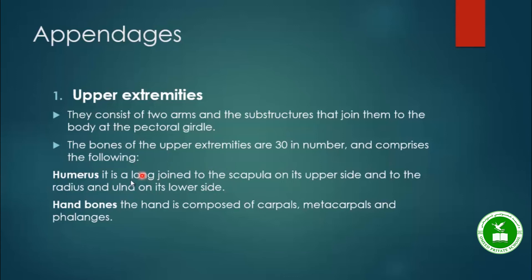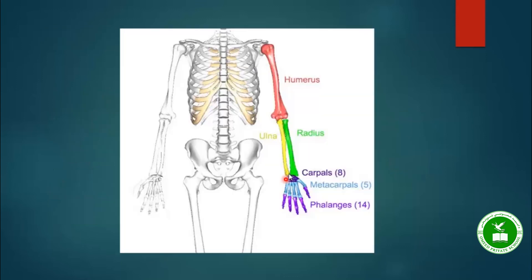The upper extremity bones include the humerus in the upper arm, which connects to the scapula on its upper side. In the lower arm, there are two bones: the radius and the ulna. So in total the upper arm and forearm have three bones: the humerus, ulna, and radius.